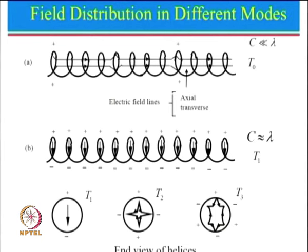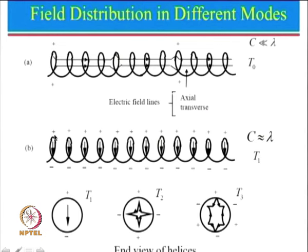Let us look at the field distribution, starting with the axial mode where the circumference is approximately equal to lambda. This mode is known as T1 mode. Starting from a point where the field is plus: if we complete one full turn, that is approximately equal to lambda. We know that if the wavelength equals lambda, the field varies from plus to 0 to minus at lambda/2 and back to plus. So this plus will again appear because the distance is approximately equal to lambda.